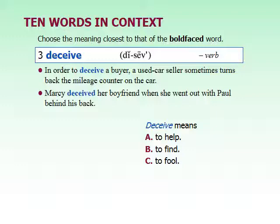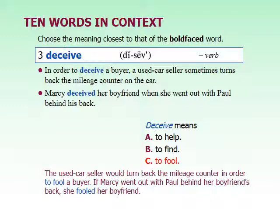Our next word is deceive, a verb. In order to deceive a buyer, a used car seller sometimes turns back the mileage counter. Mary deceived her boyfriend when she went out with Paul behind his back. Deceive means to fool — really, to trick someone or make someone believe something where the truth is different. On page 131, number nine: to make someone believe something that's not true.